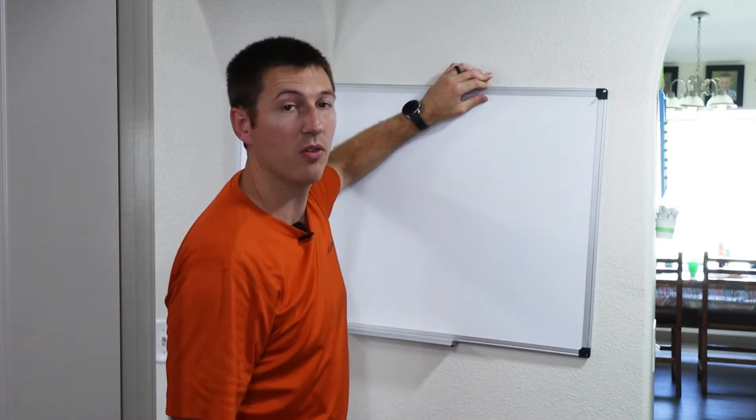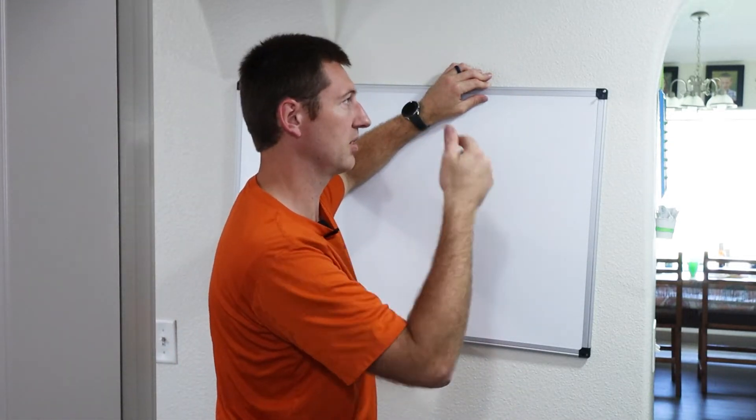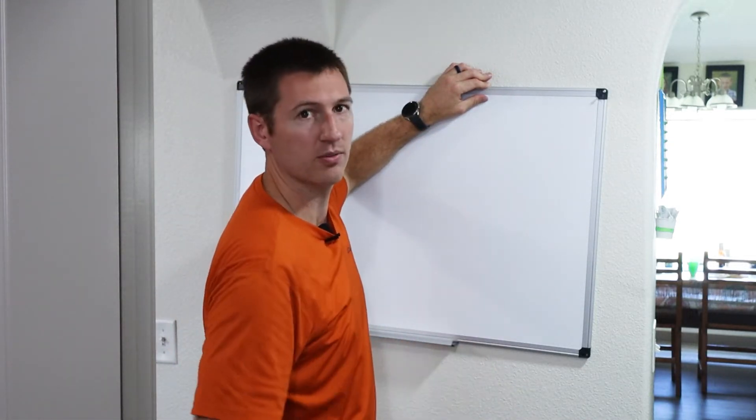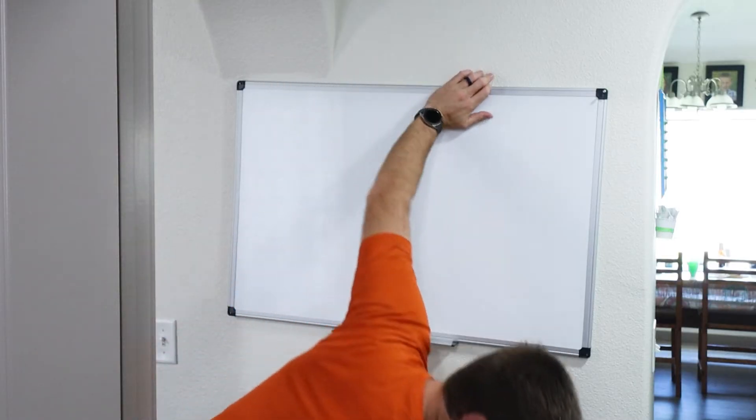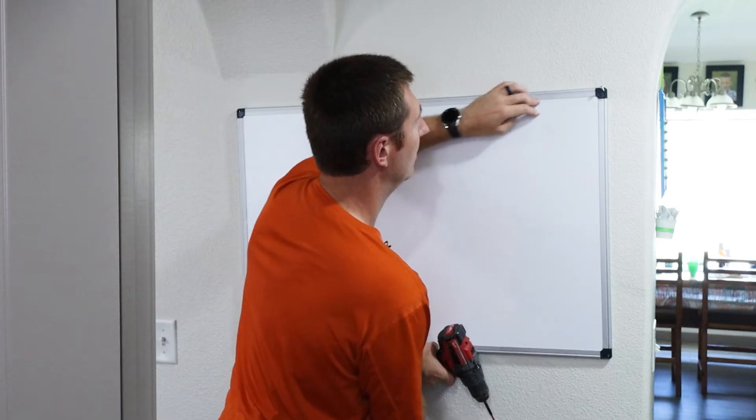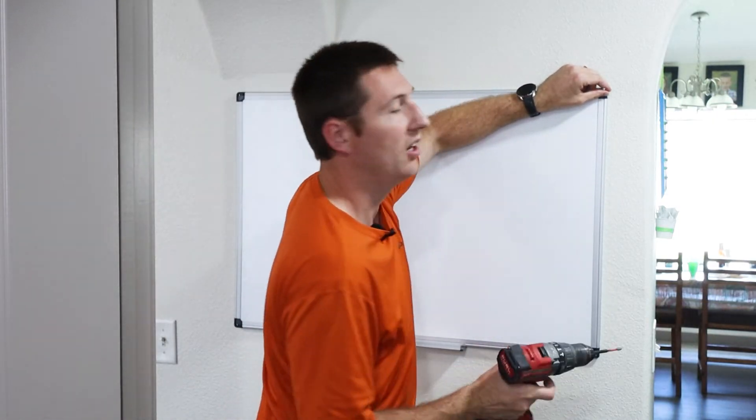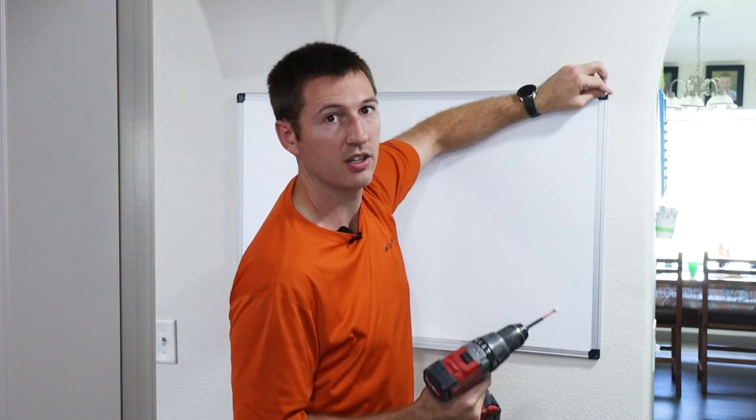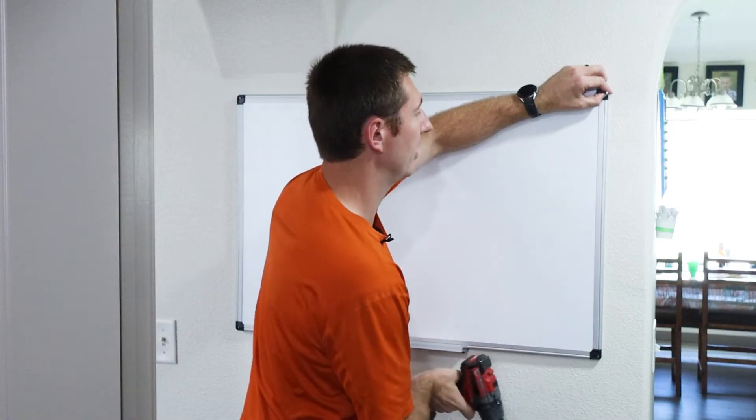If you're going into the drywall and there's no stud behind it you're going to need one of those mollies or plastic pieces because the drywall is not super strong by itself. Obviously if you have two people it's easier than if you just have one but we're going to show you how to deal with just one.